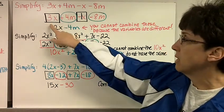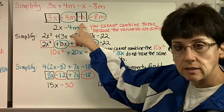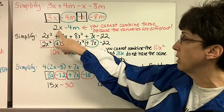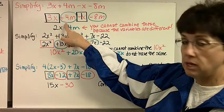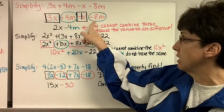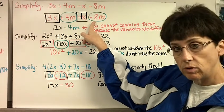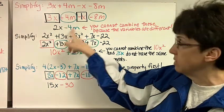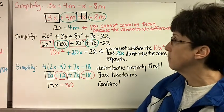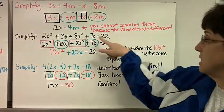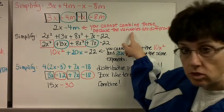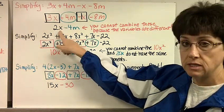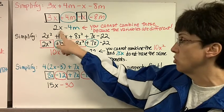So now let's combine. 3x minus 1x, that's going to be a subtraction problem. 3 take away 1 is 2. I have 2x. 4m, positive 4m and negative 8m, that's going to be a subtraction problem because the signs are different. And my answer is negative 4m because I had more negatives to begin with. And I cannot combine these because the variables are different. So I can't do anything else because the x and the m are different. So they're not like terms.